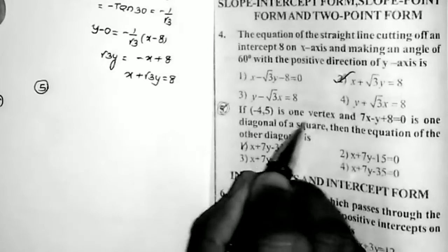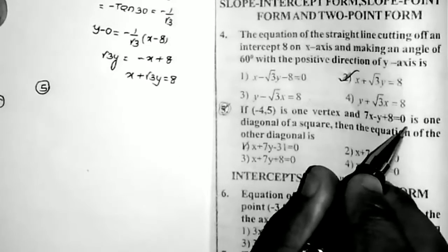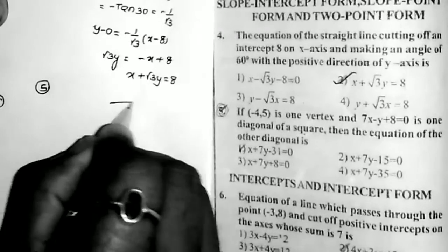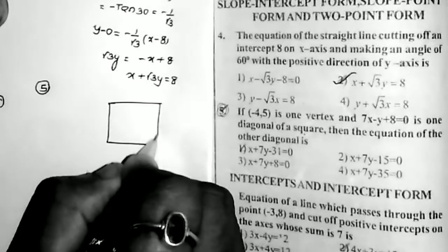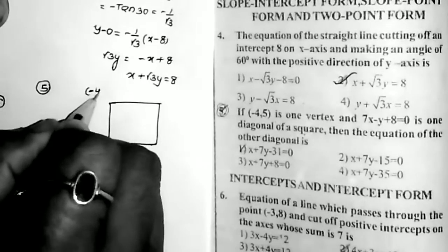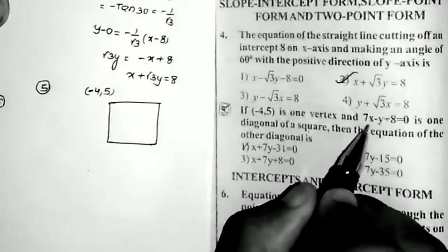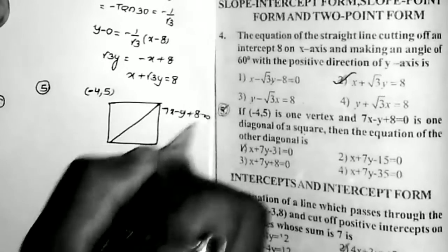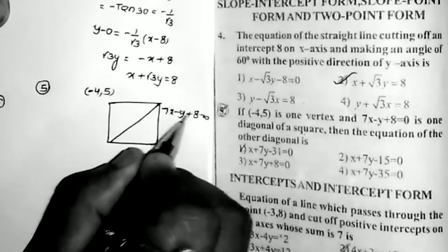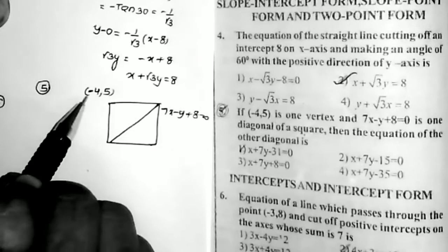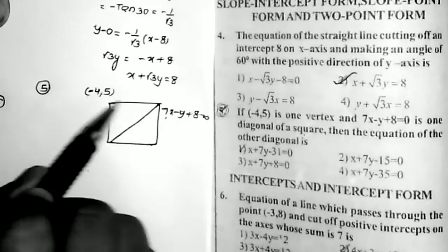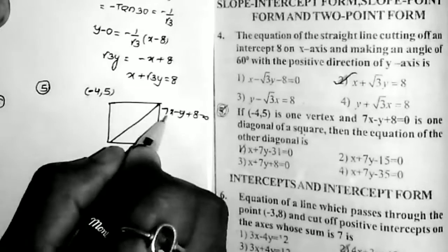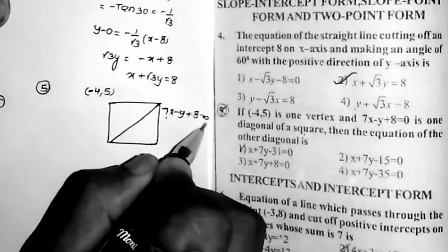Sum number 5: if (−4, 5) is one vertex and 7x − 4y + 8 = 0 is one diagonal of a square, then what is the equation of the other diagonal? One vertex is (−4, 5) and one diagonal is 7x − 4y + 8 = 0. Checking: replacing (−4, 5) in the equation gives −28 − 20 + 8 ≠ 0. So this diagonal does not pass through the given vertex.